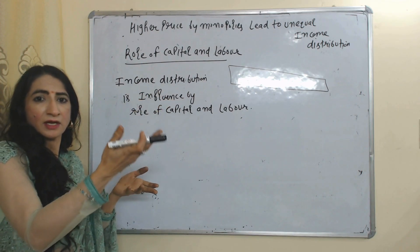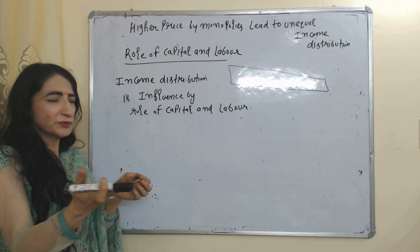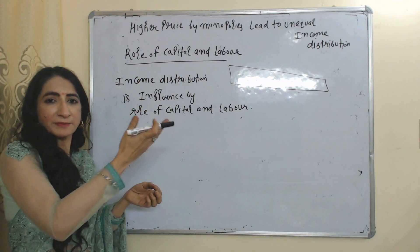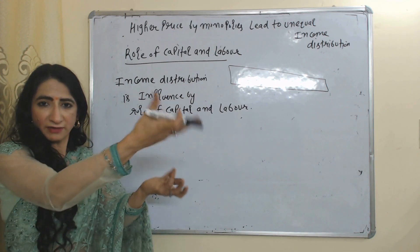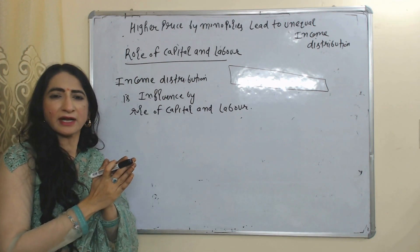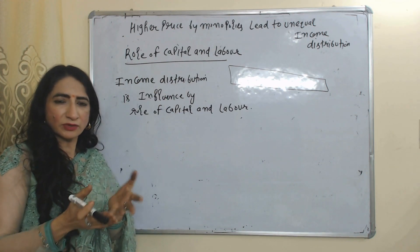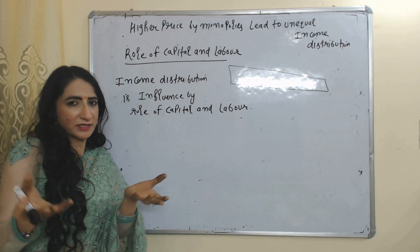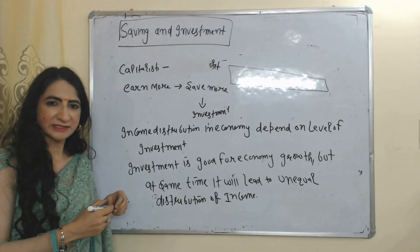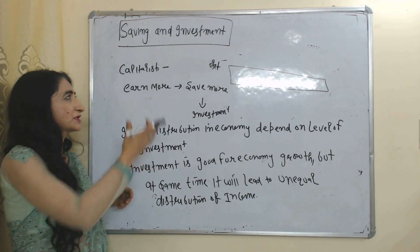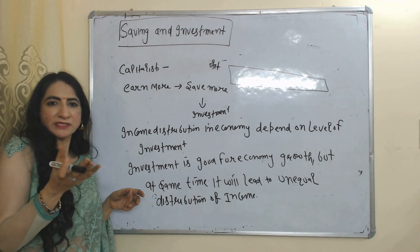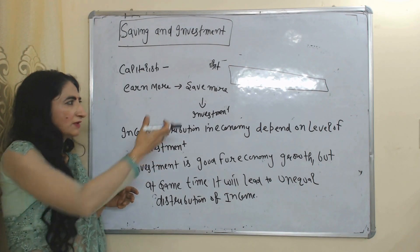The second thing that can influence income distribution is the role of capital and labor. Capitalists earn more profit and eventually more income. On the other hand, the labor class is not able to earn more income, which leads to unequal distribution in the economy.